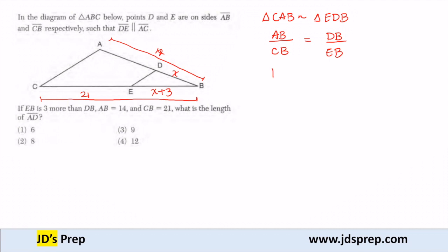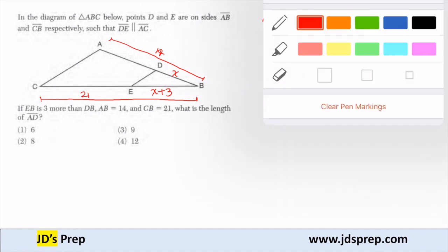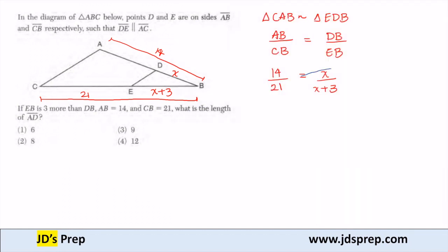Side AB equals 14, and CB was given as 21. Side DB we set to be X, and EB is 3 more, so X plus 3. The sides are in proportion, so we're going to solve by cross multiplying. I have 14 times X plus 3 equals 21 times X.